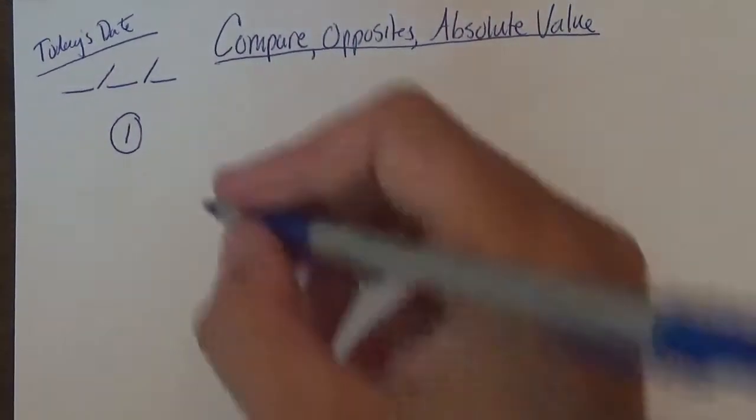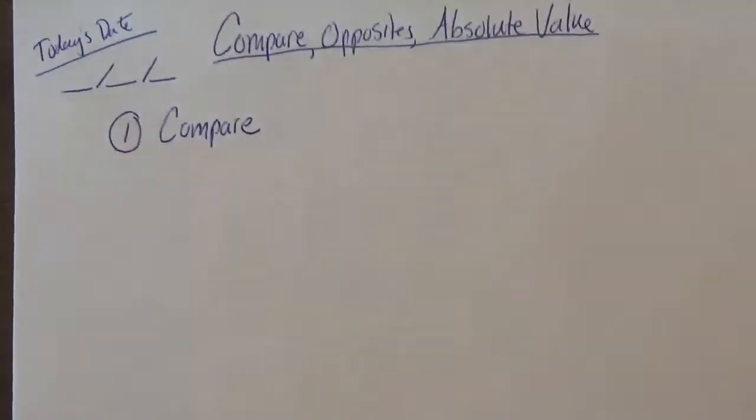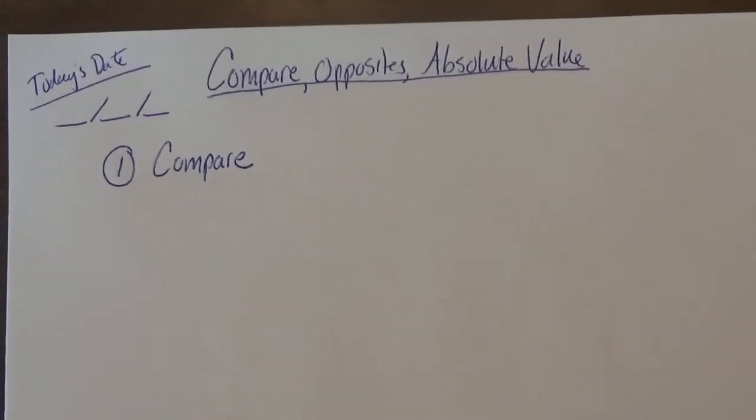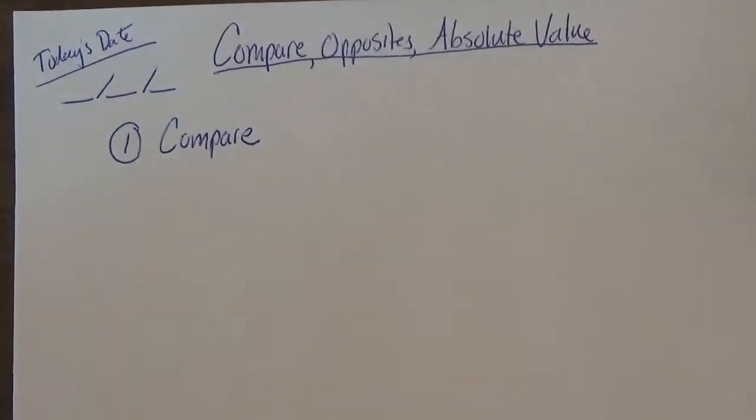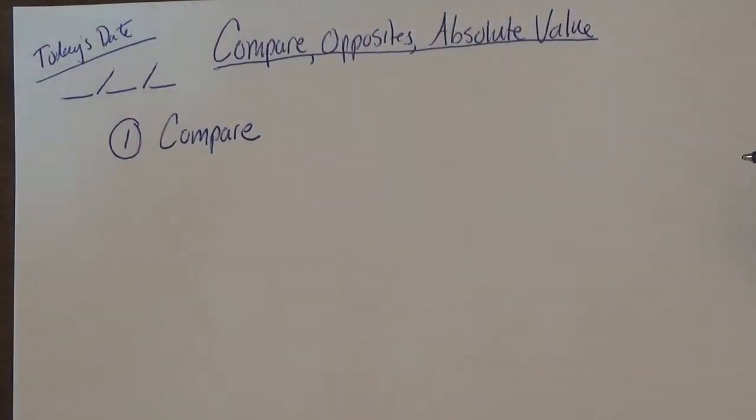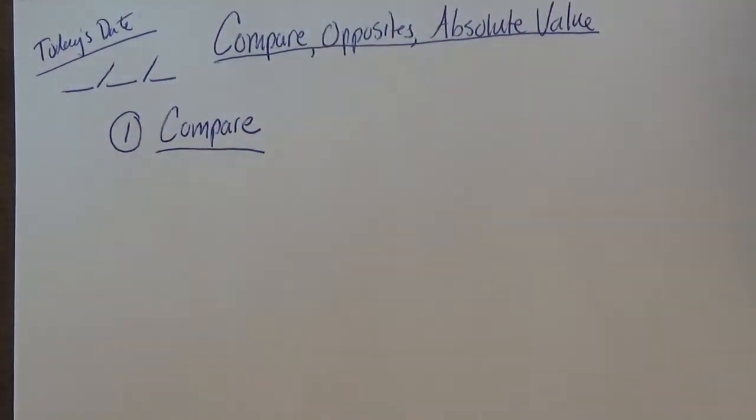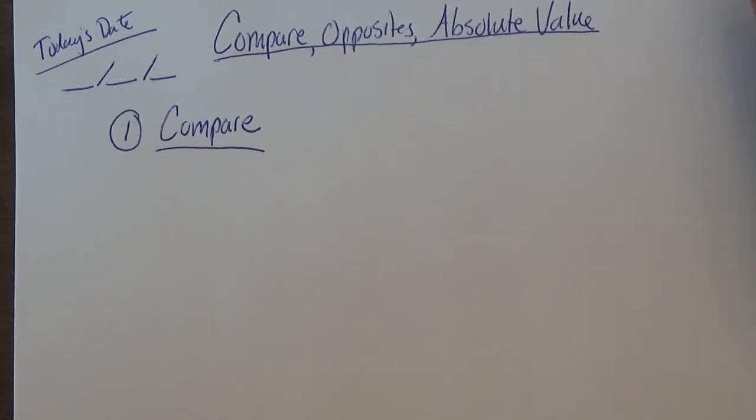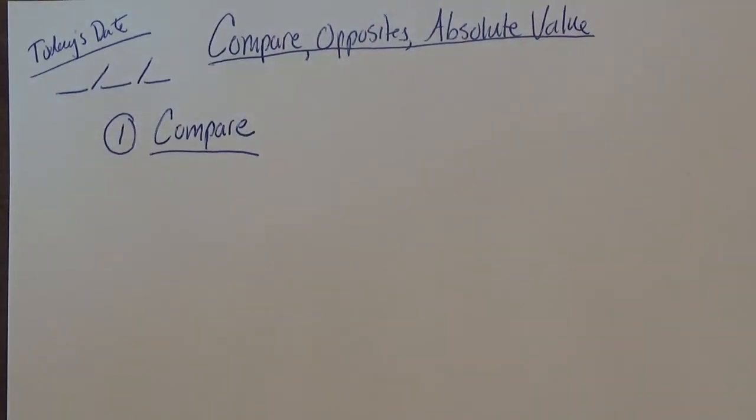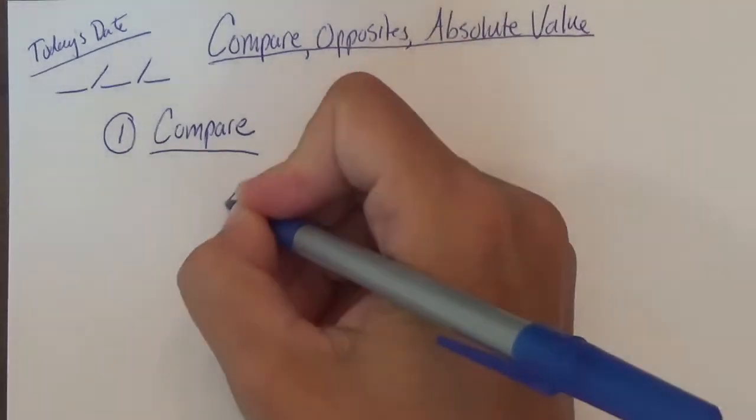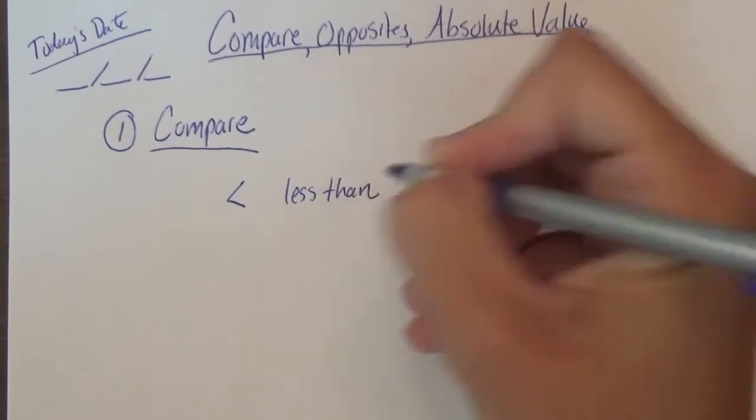So we're going to start with comparing. Sometimes I do write fast, so hopefully if you need me to pause it, raise your hand if you're in class, or type in the chat and we can pause it. So compare. Now what do I mean? If a number is greater than another number, we need a symbol to show that. I think you probably already know it. I'm going to start with this one actually. This is the less than symbol.